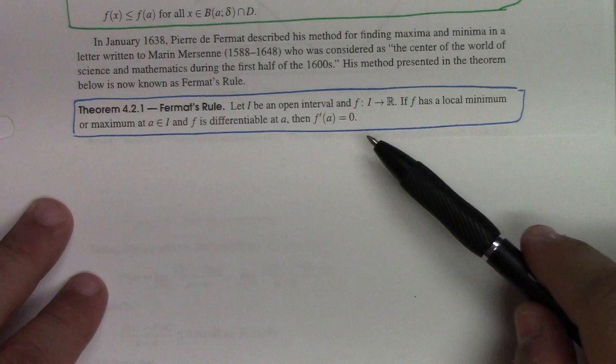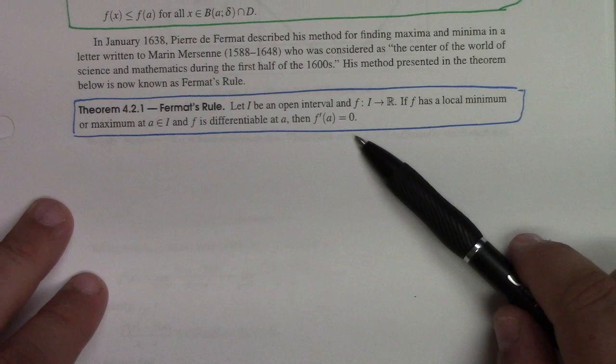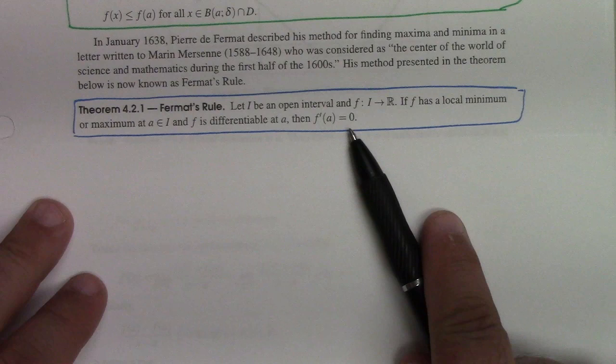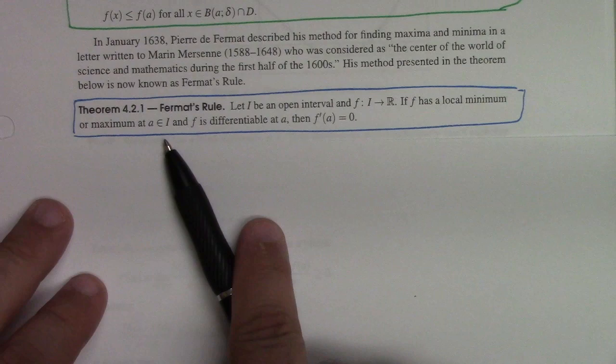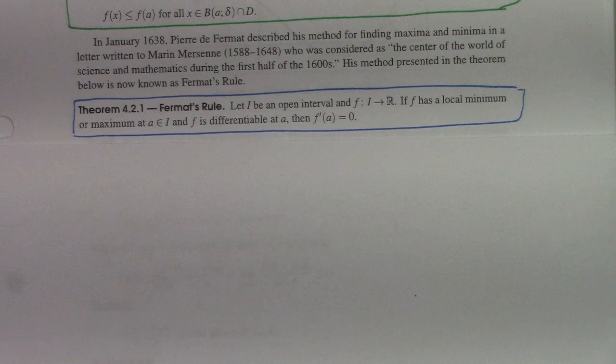If you think about it, a local max or min has got to be a place with a horizontal tangent. That makes a lot of sense. In addition, we can extend Fermat's rule to say: f has a local maximum or minimum at a, then either f is differentiable with derivative zero, or the derivative doesn't exist.